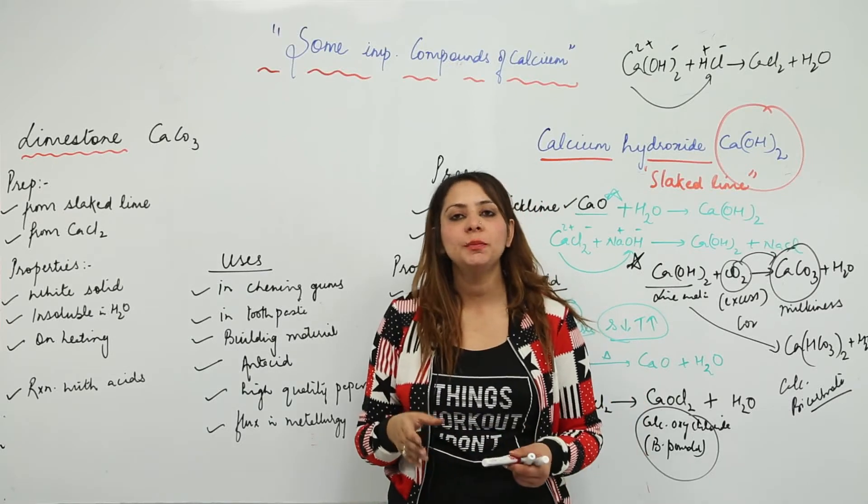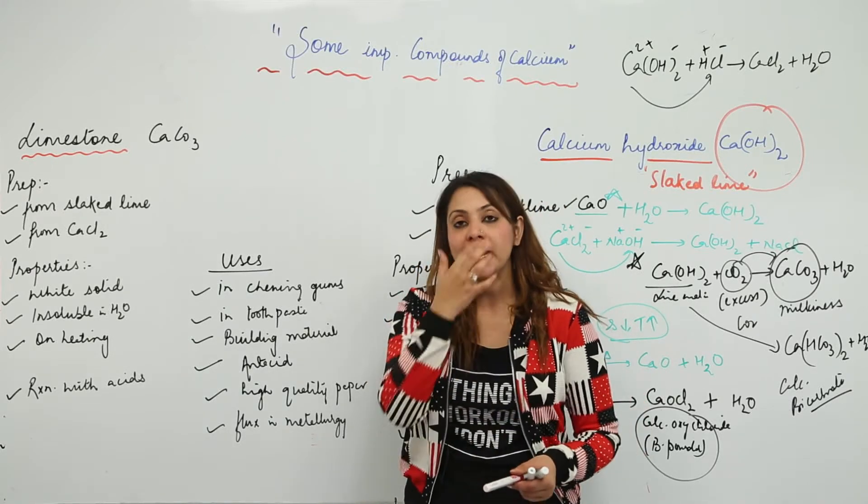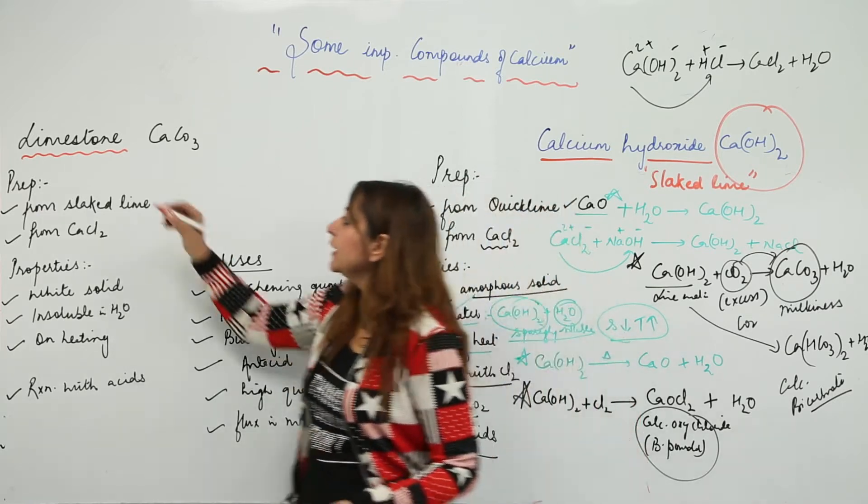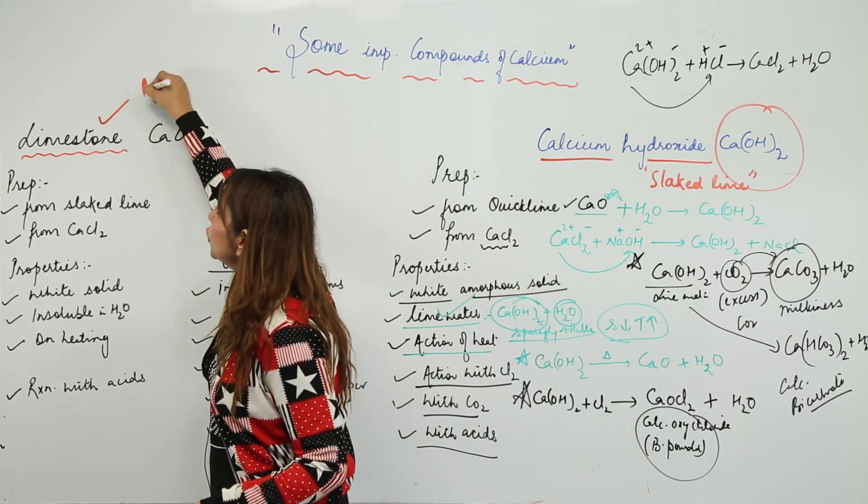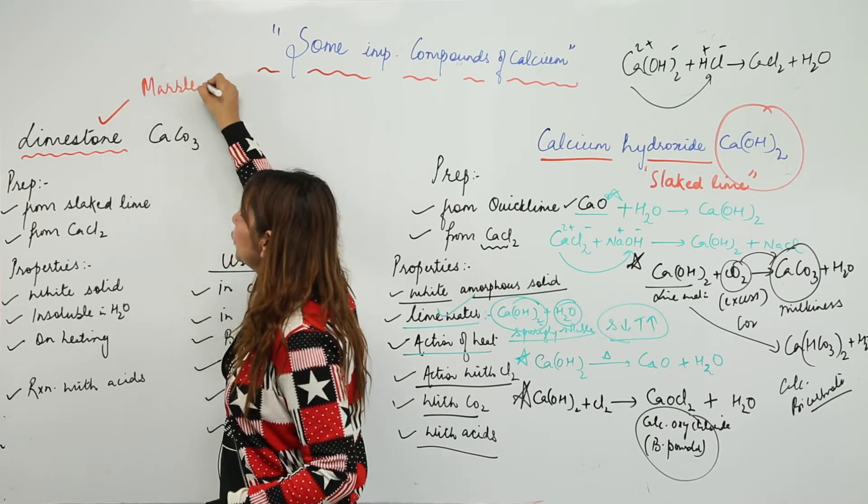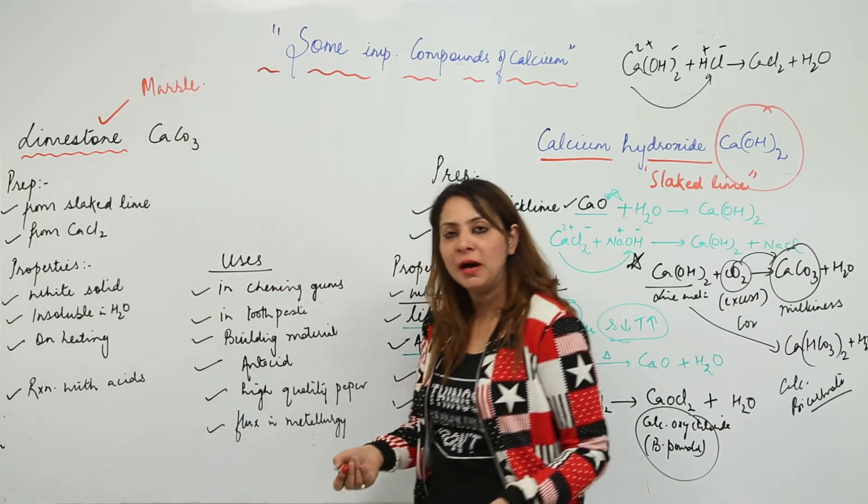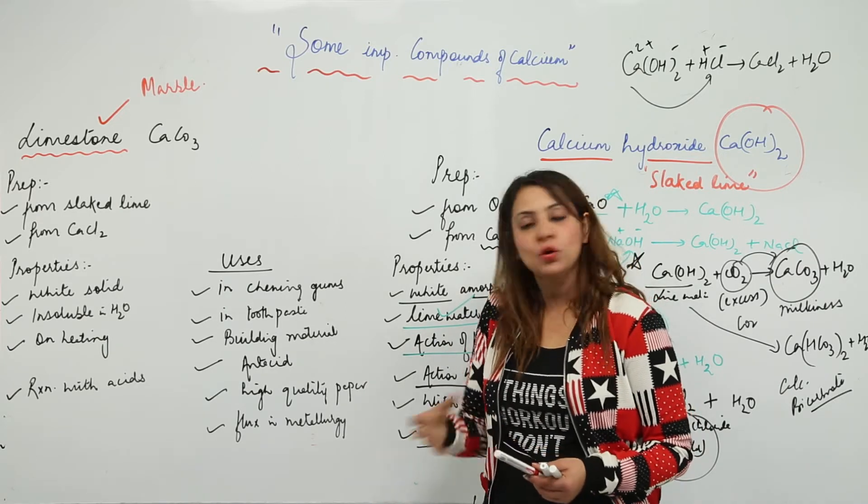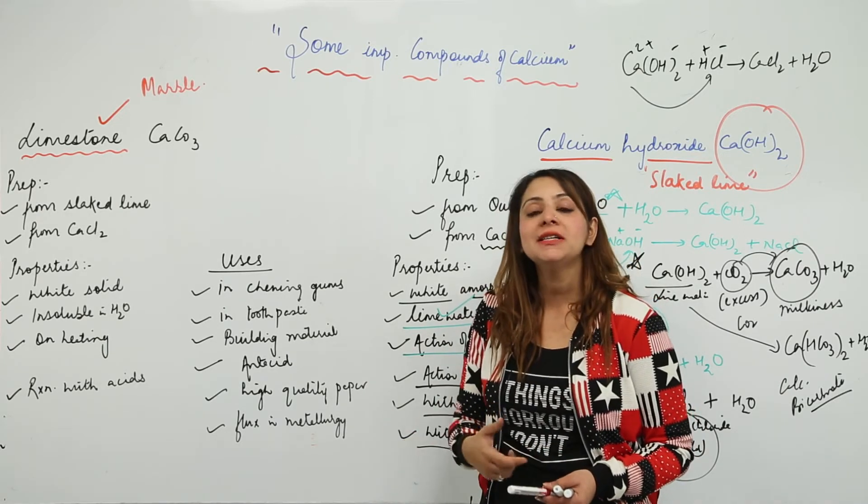We are going to start with the main compound of calcium, which is calcium carbonate. The common name for this is limestone, also called marble. You've all come across marble - maximum homes have marble chips or floors made up of marbles. Marbles are none other than limestone, that is calcium carbonate.